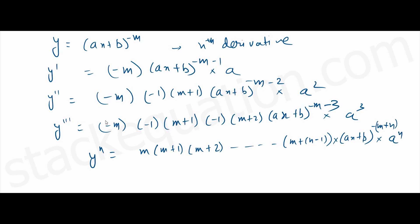For the sign, if you observe: for the second derivative it was a positive sign, for the third derivative it's a negative sign, because there are 3 minus signs in the expression. So it's minus 1 to the power n. That's the expression for the nth derivative of (ax + b) to the power minus m.